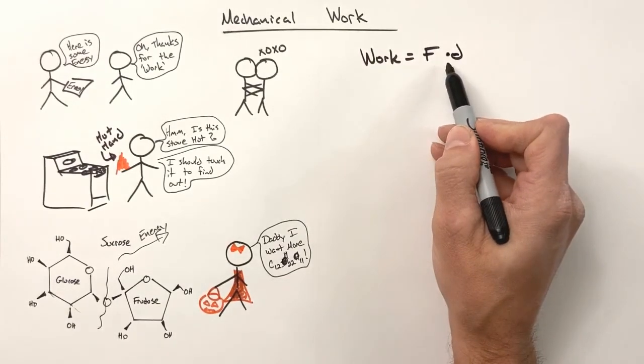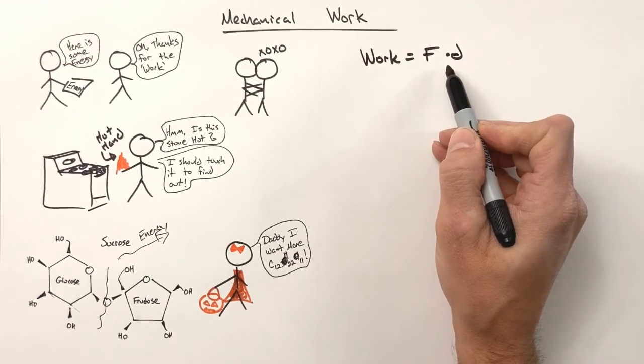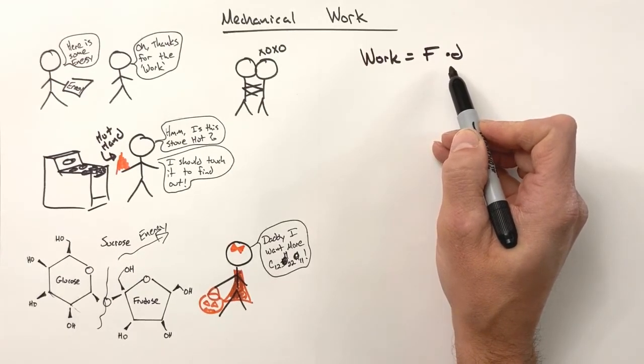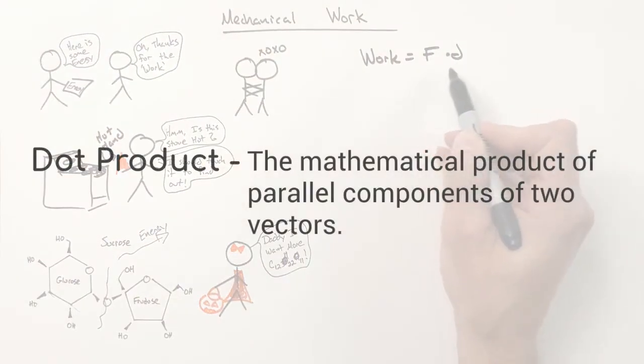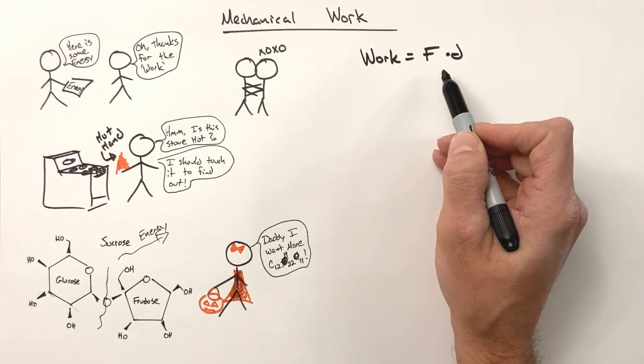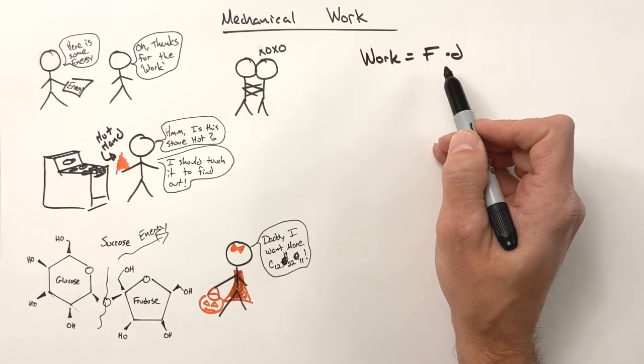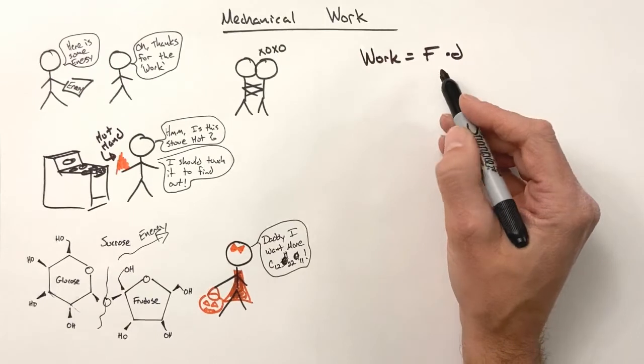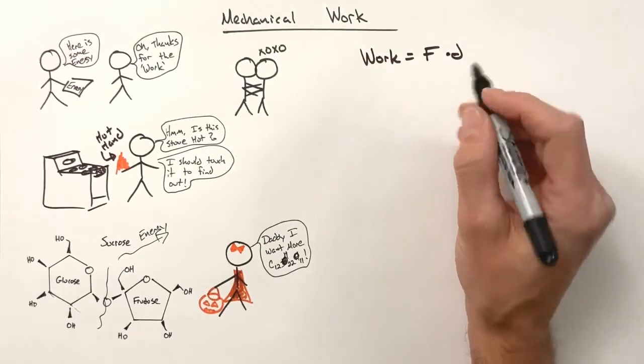Now, this little dot right here, this is not a multiplication symbol. A dot product is a mathematical operation based on matrices and linear algebra. And while some of you nerds out there may be saying yay, matrices and linear algebra, myself included, sadly, we're not going there today.